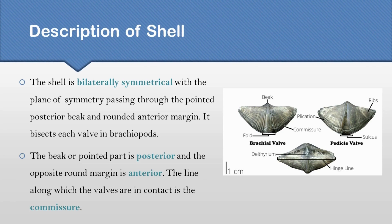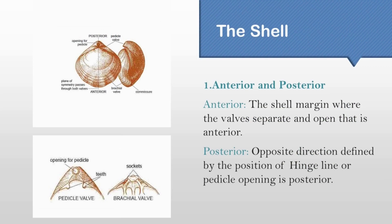The shell has anterior and posterior parts. The anterior part is the direction of shell growth, and the opposite direction is the posterior part, which is defined by the position of the hinge line.